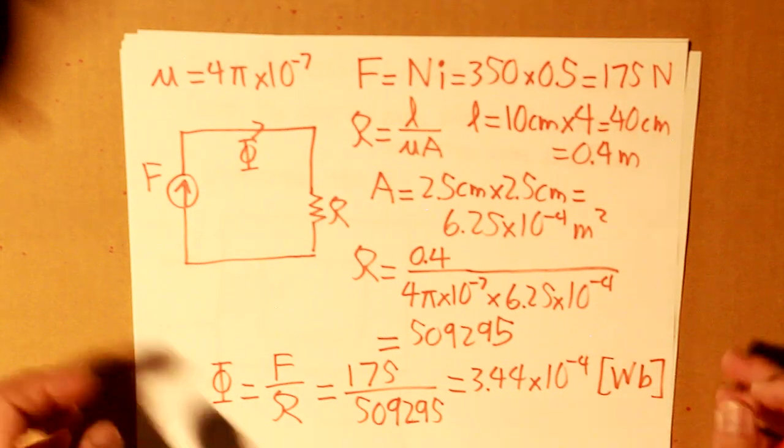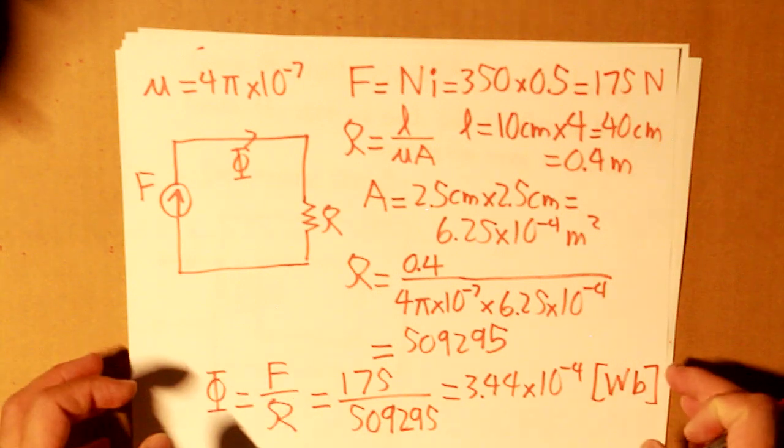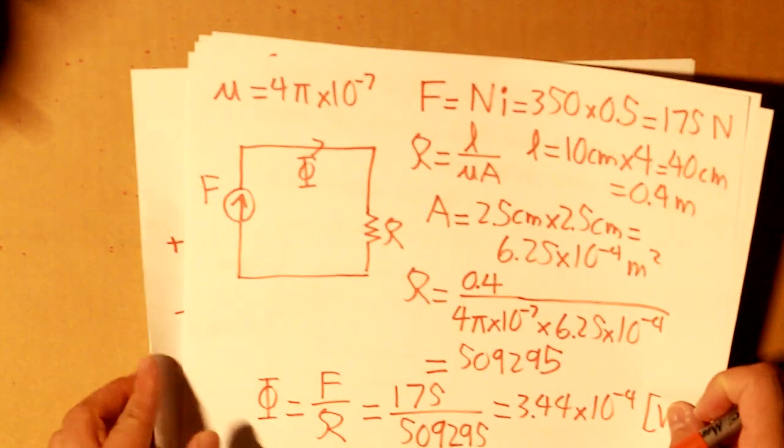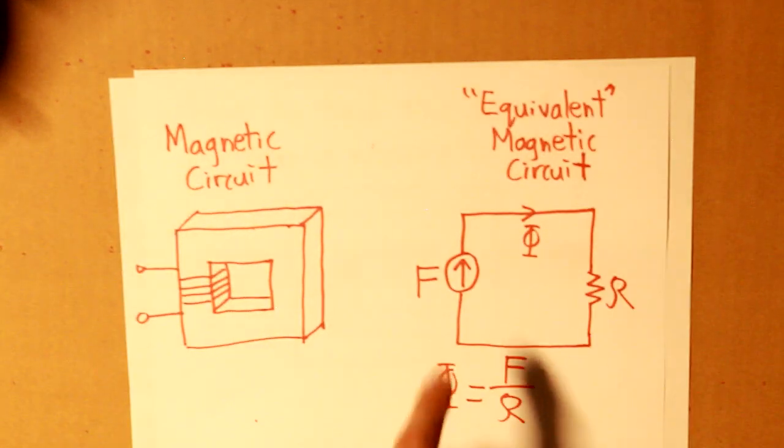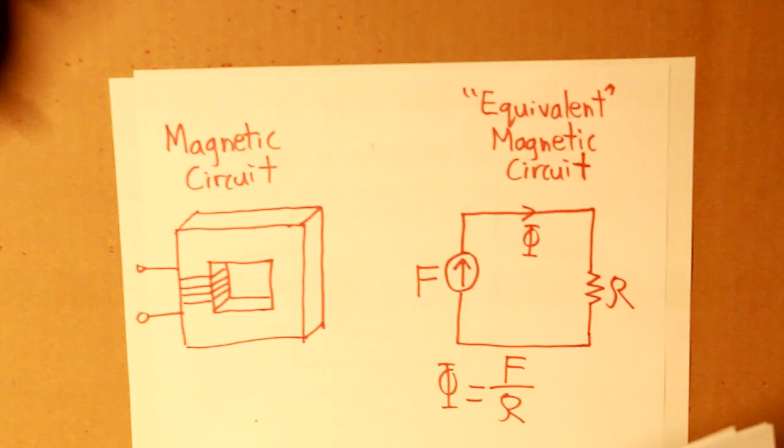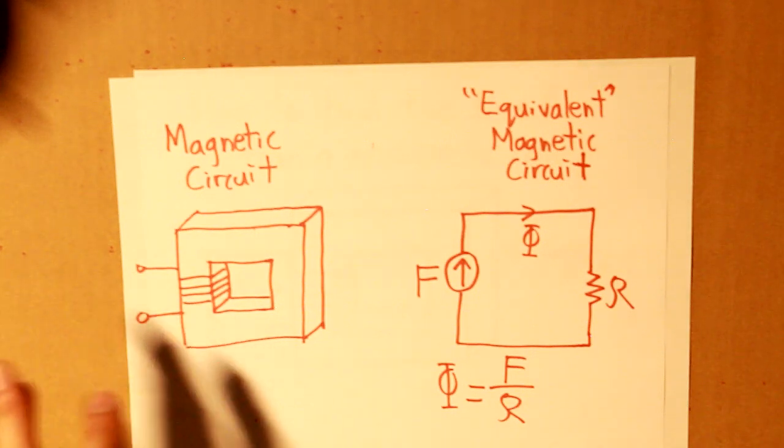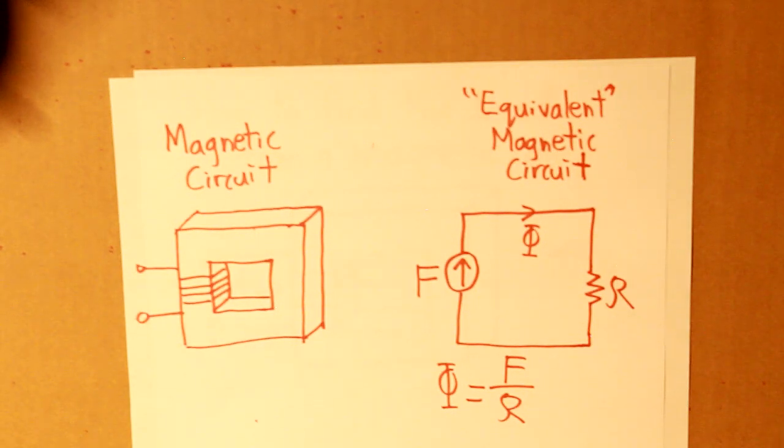So, there we have it. This is a simple video on how to determine the flux from a magnetic core. And to do that, what we need to do is we take the magnetic circuit, convert it to an equivalent magnetic circuit. Understand that the flux behaves similar to a current flowing through an electric circuit. And then, we have to find our magnetomotive force value, our reluctance value. And then, we can find the value of our flux, of which the current is flowing through the coil, wrapped in a magnetic core. I hope you guys enjoy this video, and I will see you next time.